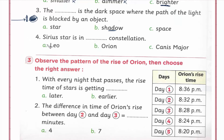Number four: Sirius star is in which constellation? Sirius موجودة في Canis Major constellation - or the big dog constellation.